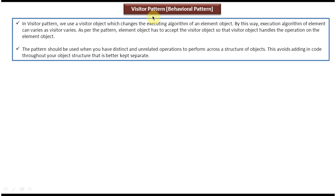First, we will see the explanation of Visitor Design Pattern. In Visitor Pattern, we use a Visitor Object which changes the executing algorithm of an Element Object. By this way, the execution algorithm of an Element can vary as the Visitor varies. As per this pattern, the Element Object has to accept the Visitor Object so that the Visitor Object handles the operation on the Element Object.